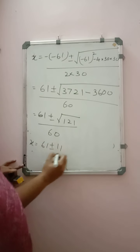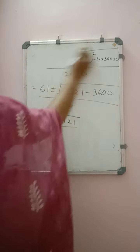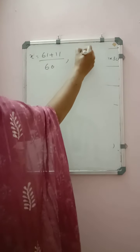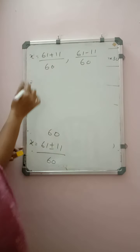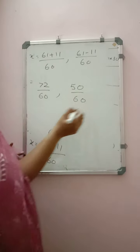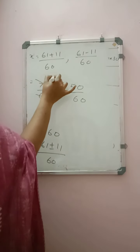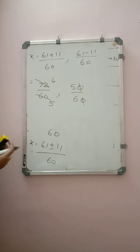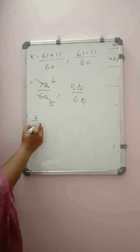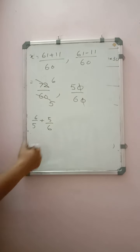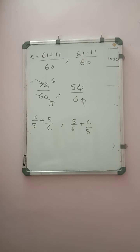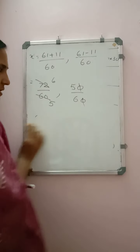So x = (61 ± 11) / 60. First value: (61+11)/60 = 72/60, second value: (61−11)/60 = 50/60. Both are divisible by 12: 72/60 = 6/5 and 50/60 = 5/6. Both numbers are correct because if you take the number as 6/5, its reciprocal is 5/6 and vice versa. The answer is: the number is 5/6 or 6/5.